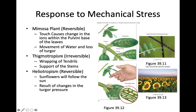You can also have thigmotropism, which is an irreversible response — this is that wrapping of tendrils I showed you in my passion flower vine. Thigmotropism is the directional growth of a plant or plant part in response to contact with an object, an animal, another plant, or even the wind. In high wind areas, plants are able to grow thicker and shorter internodes in response to that wind so they can withstand the pressure, and you also have the wrapping of tendrils like in my passion flower vine.